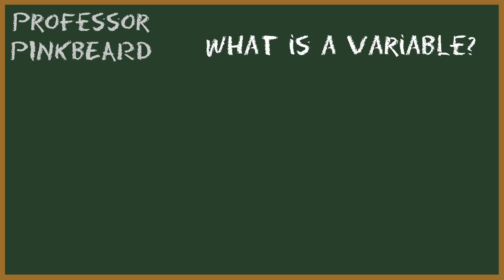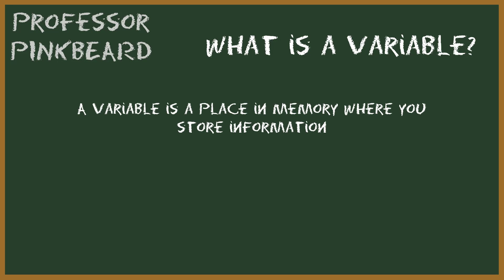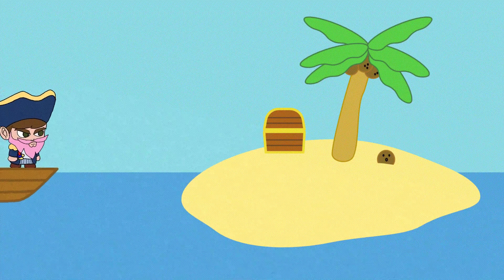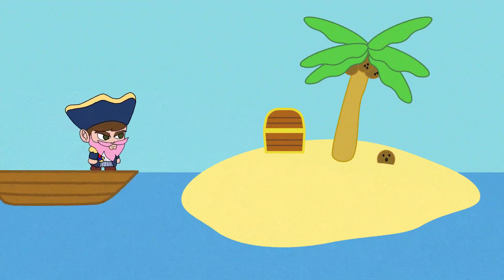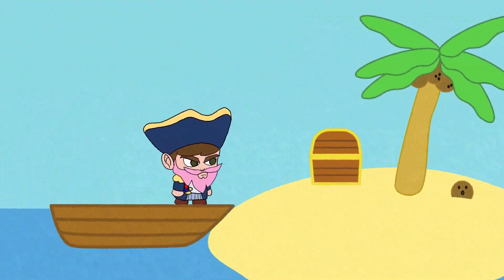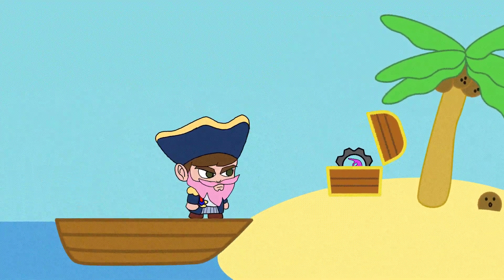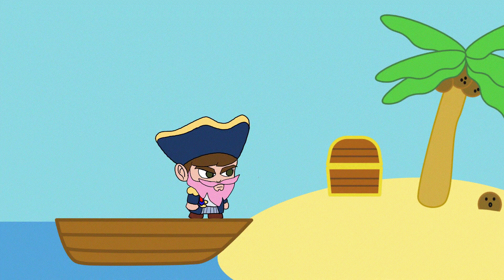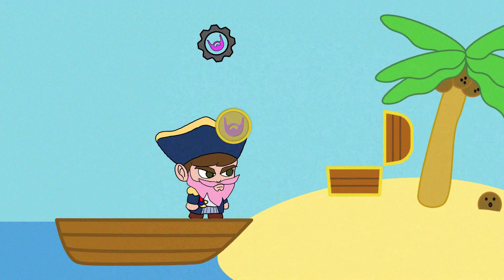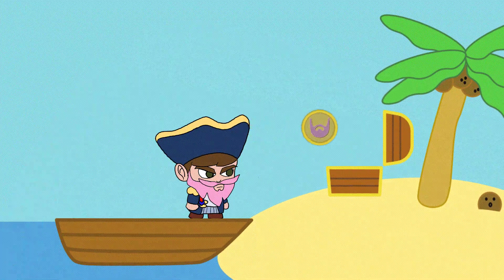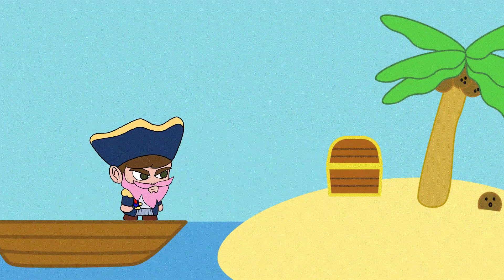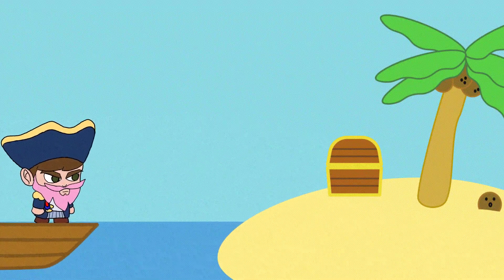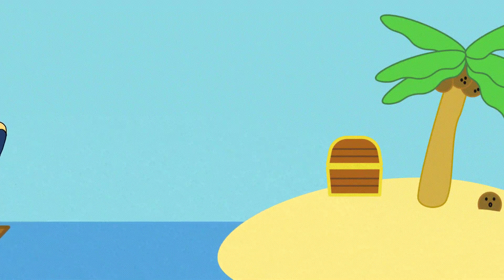So what exactly is a variable? A variable is simply a place in memory where you can store information. Think of it as a box that you can put stuff in. However, a variable can only hold one piece of information at a time. So if you put something into a variable's box and then try to put something else in, it will get rid of the first thing and hold the second piece of information.